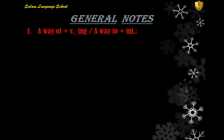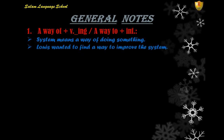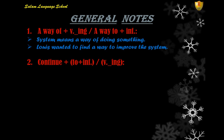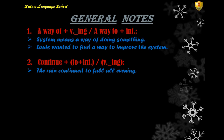Some more general notes. First: 'a way of' plus a gerund, or 'a way to' plus an infinitive. For example: 'A system means a way of doing something.' Or: 'Louis wanted to find a way to improve the system.' Number two: the verb 'continue' can be followed by a gerund or a 'to infinitive'. For example: 'The rain continued to fall all evening', or 'He continued adding more signs to his system.'